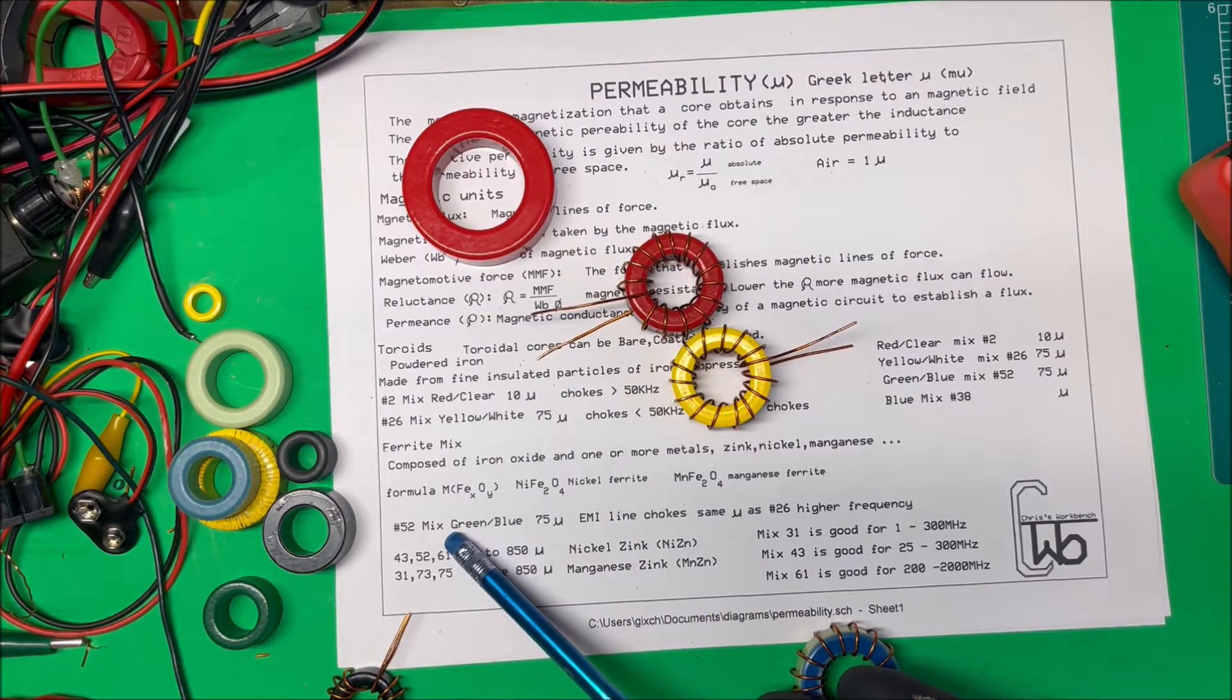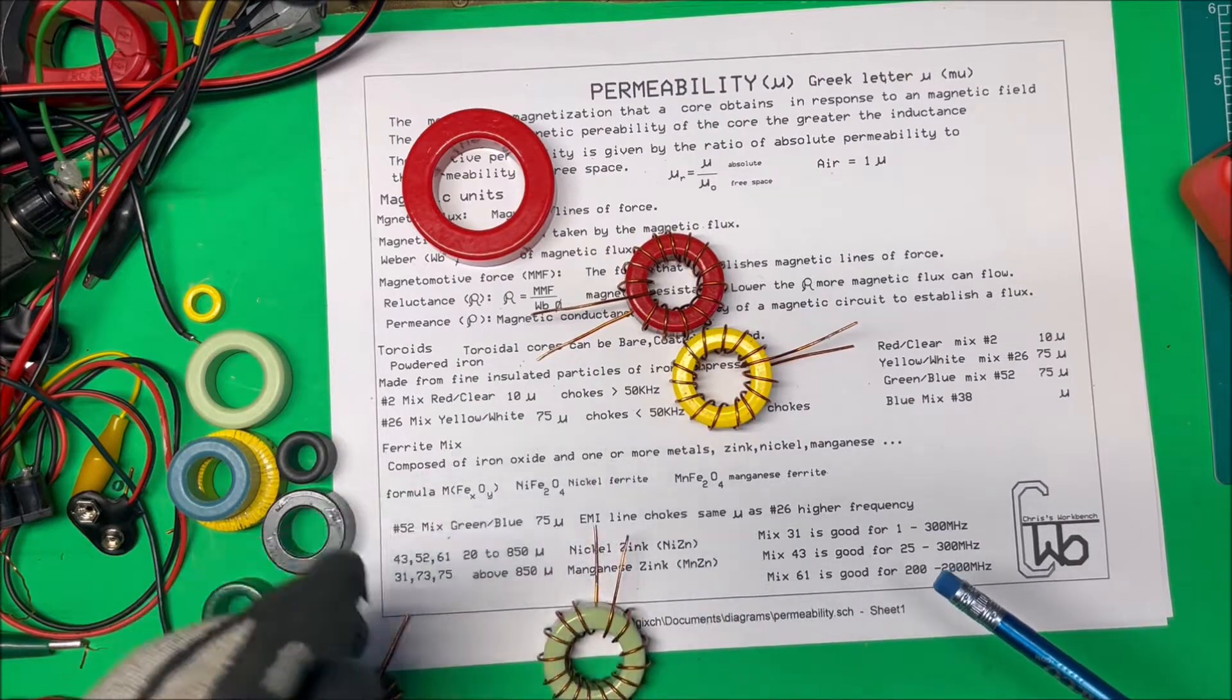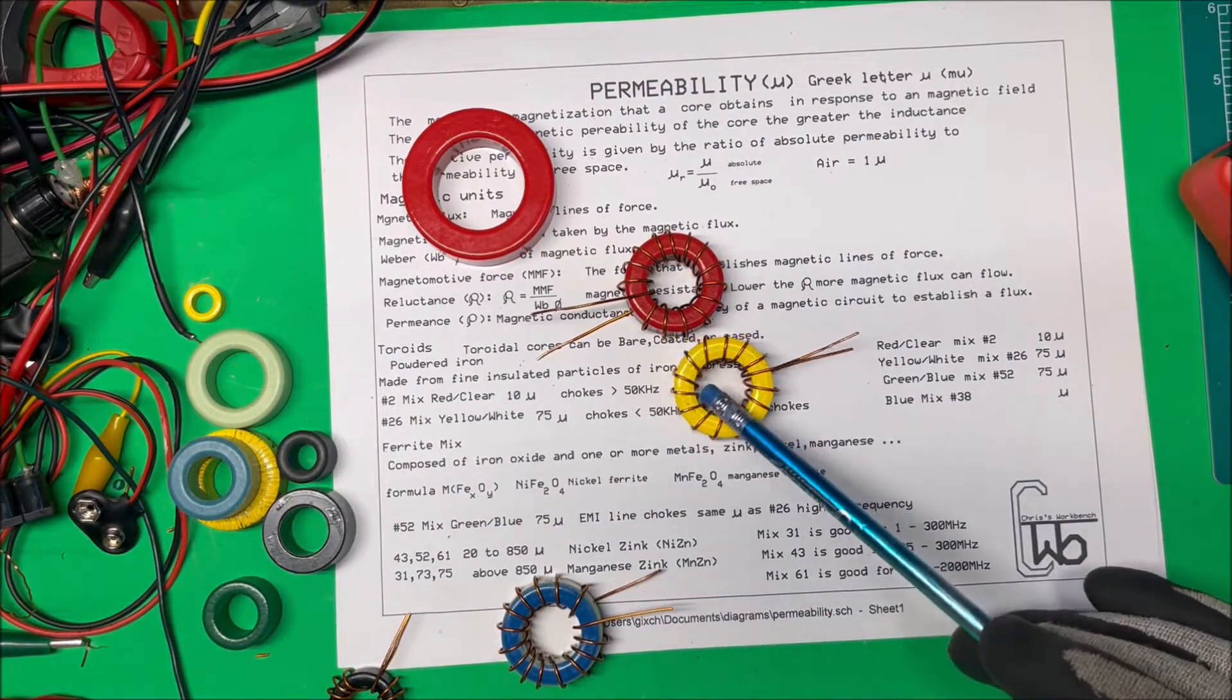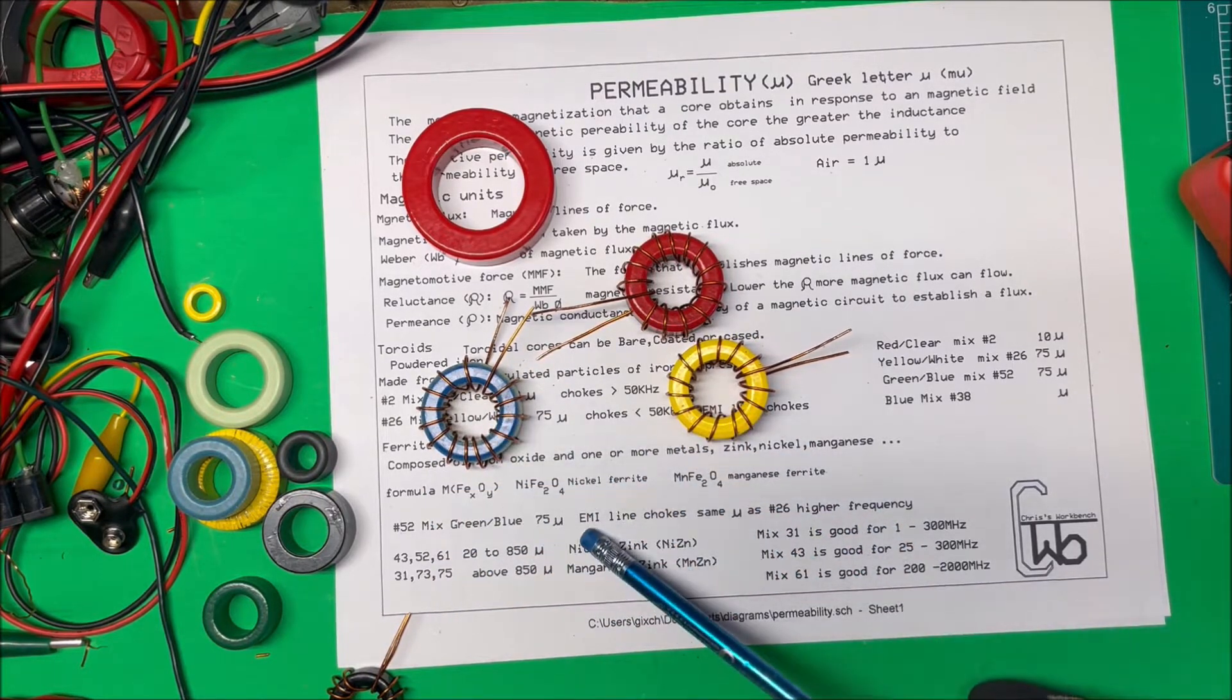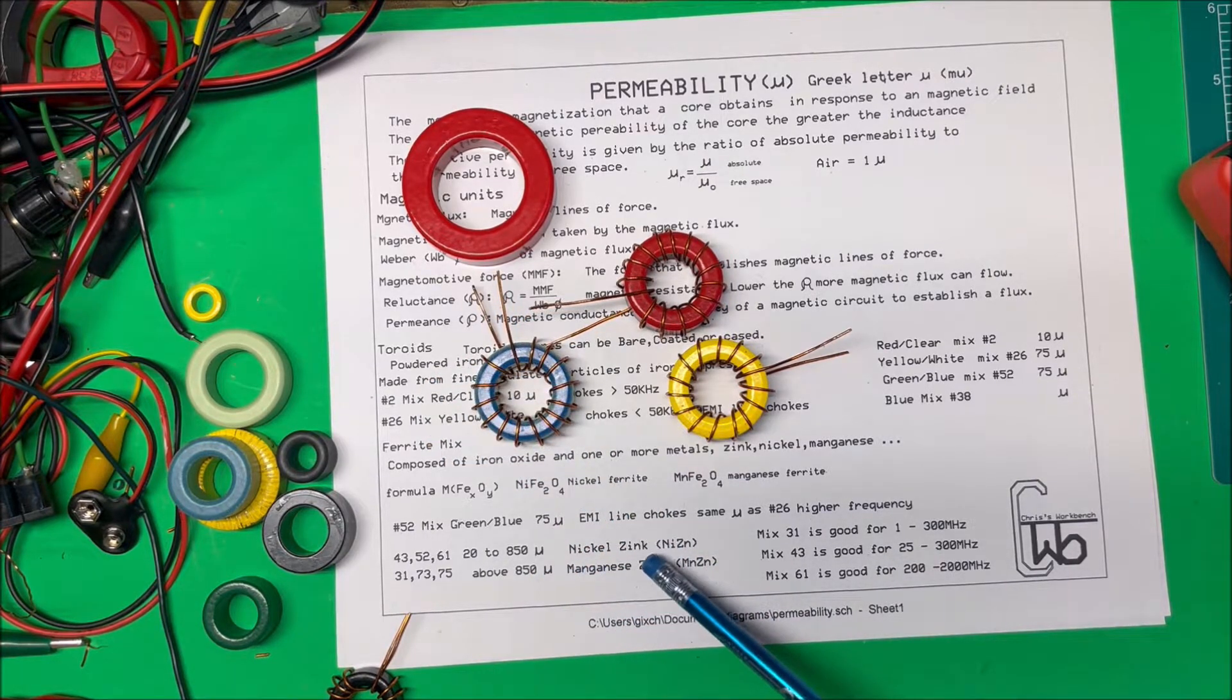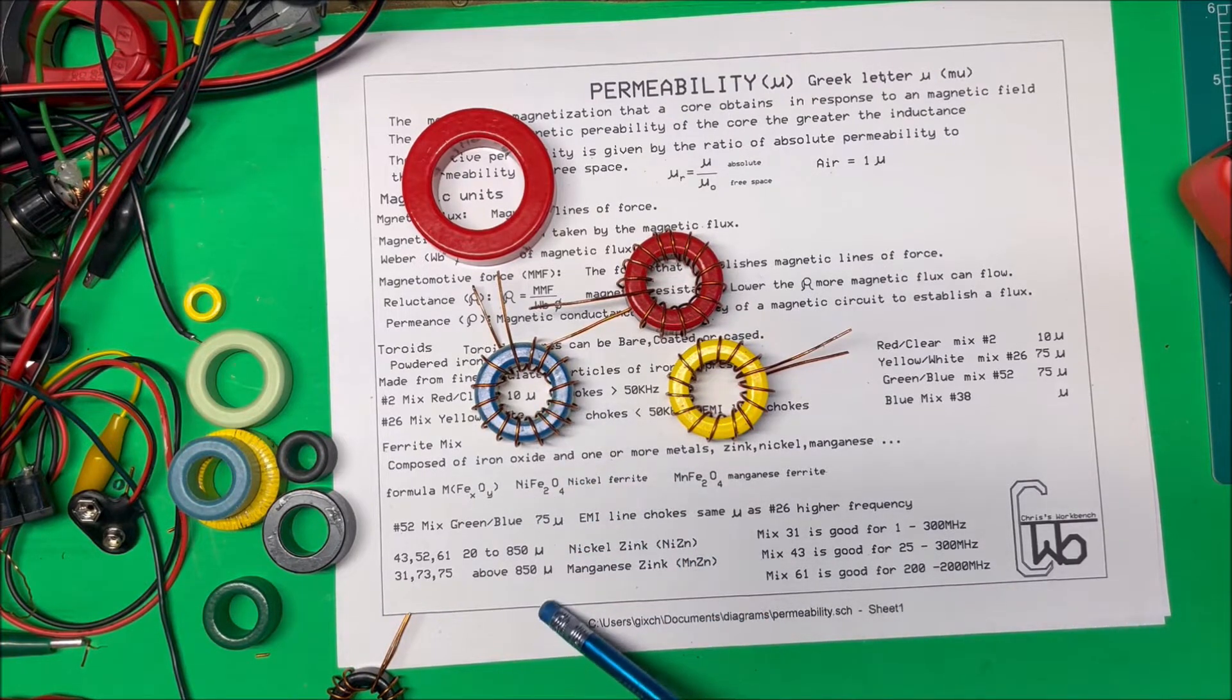Now this mixed blue green one here, here just a green on this side, blue on this side, that's the same as the yellow one, same permittivity as yellow one, but it's made for higher frequency. And it's made out of nickel zinc. So it's got nickel zinc and iron oxide in it.